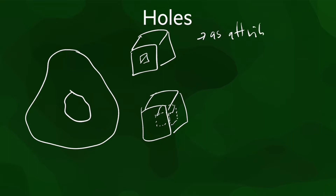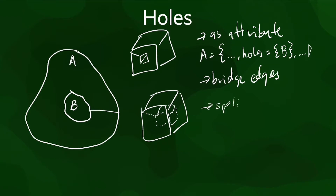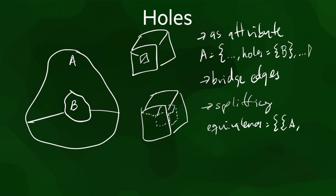We can model holes separately from the objects they are contained in, and then link them using a special attribute stored within every object. We can also join every boundary together using bridge edges, which are special edges linking each hole to the outer boundary of the object. And the last option is that we can split objects that have holes into parts, and then semantically mark that these parts are actually the same object using some kind of data structure.